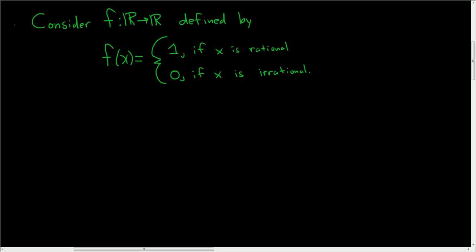Consider the function f defined as follows: f(x) equals 1 if x is rational, and it's equal to 0 if x is irrational.